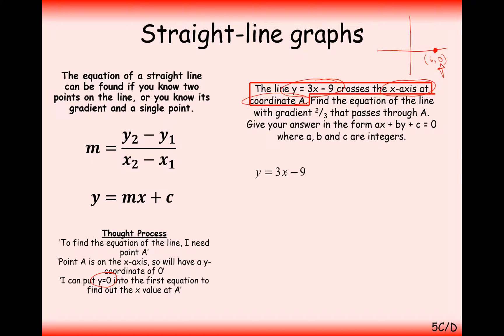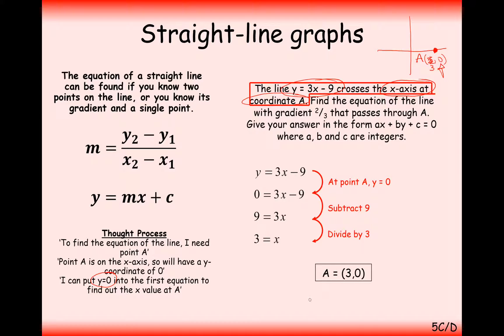Using the equation y equals 3x minus 9, we substitute y equals 0 because it cuts the x-axis. Move the 9 onto the other side and divide through by 3. So the coordinate is not (6, 0) — it's actually (3, 0). This is our coordinate A, which is where it crosses the x-axis.